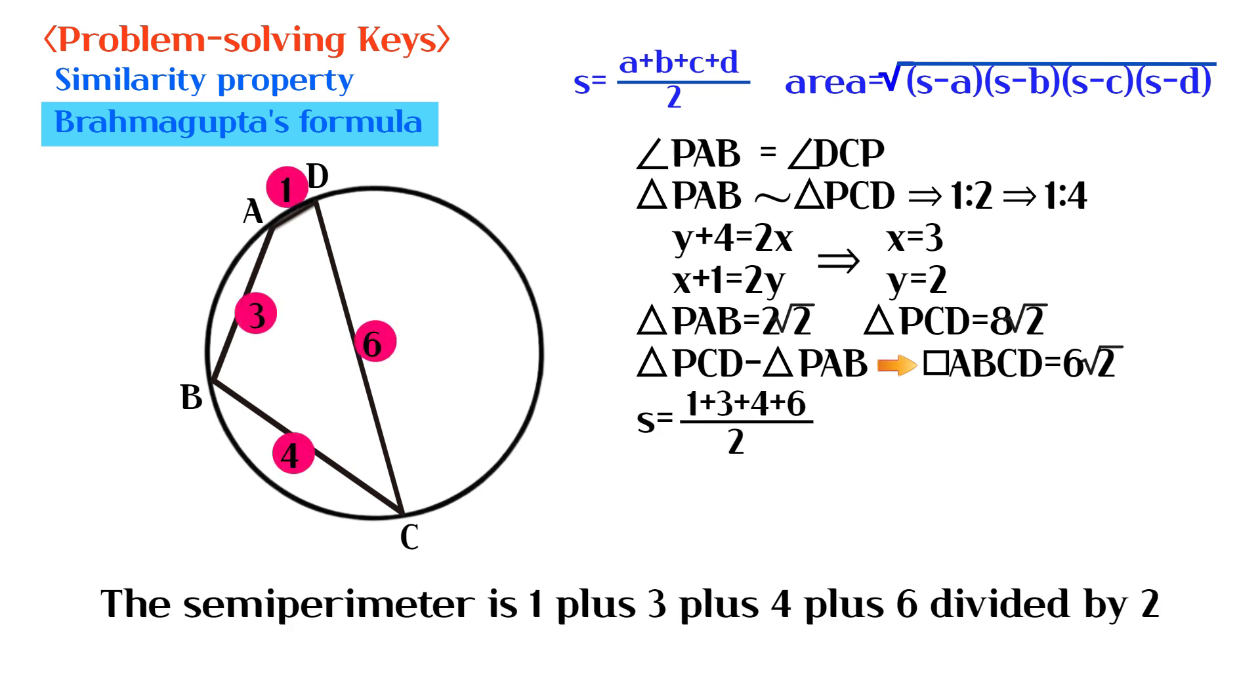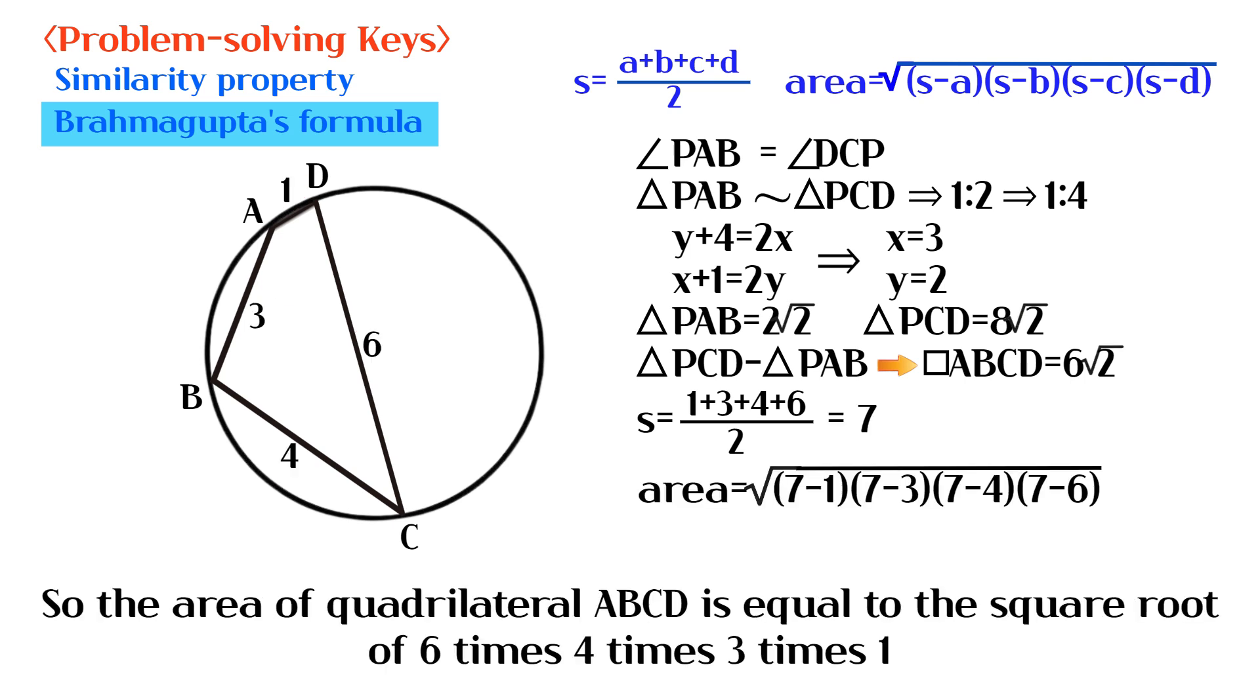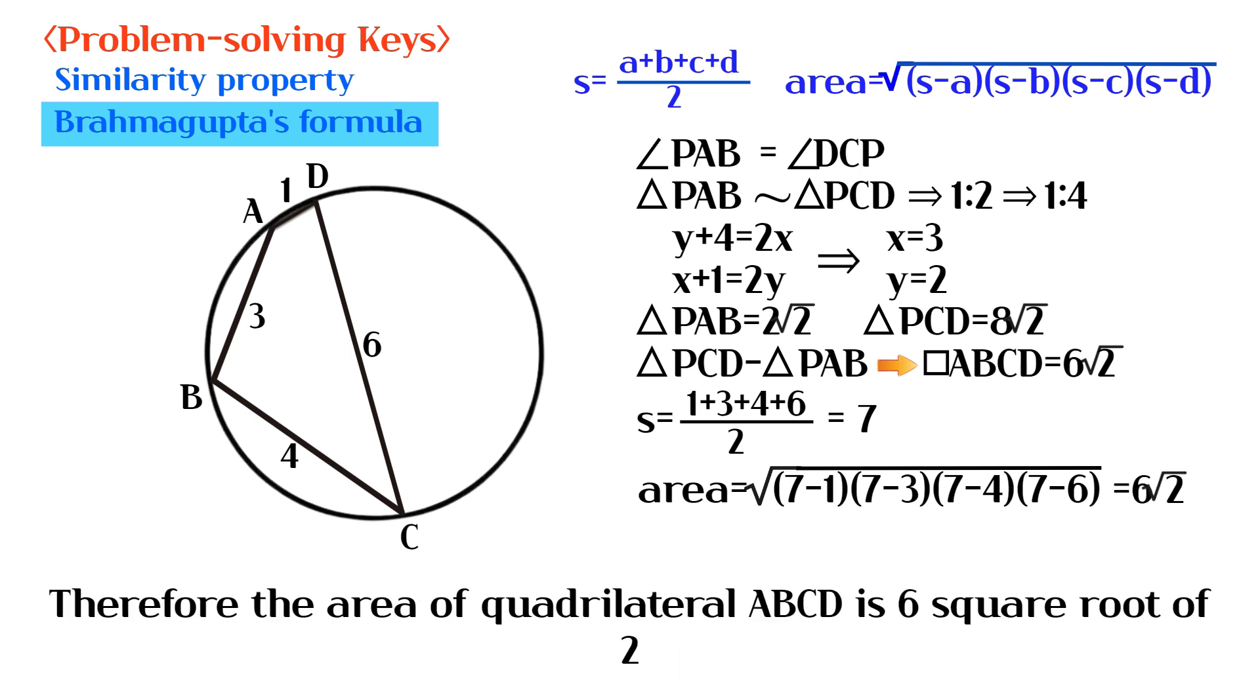The semi-perimeter is 1 plus 3 plus 4 plus 6 divided by 2. So the area of quadrilateral ABCD is equal to the square root of 6 times 4 times 3 times 1. Therefore the area of quadrilateral ABCD is 6 square root of 2.